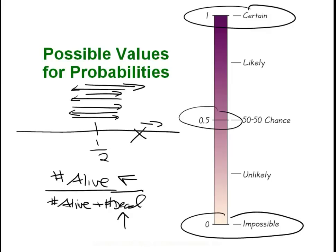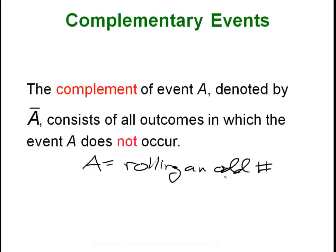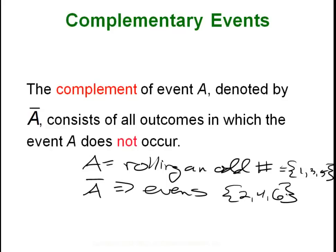Hopefully that helps you understand a little bit about the basics of probability. Next we have a complement. A complement of an event is just the collection of all outcomes that don't satisfy the original event A. So for example, if A is rolling an odd number on a six-sided die, then the complement of A is going to be everything else — all evens. A has the sample space of 1, 3, and 5, and the complement has the sample space of 2, 4, and 6. Events can get more complicated, but the complement is always just everything not in the original event.